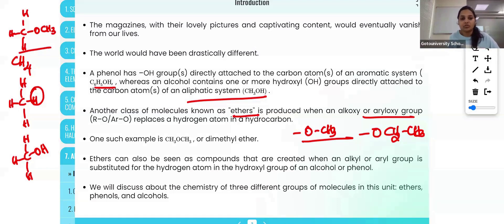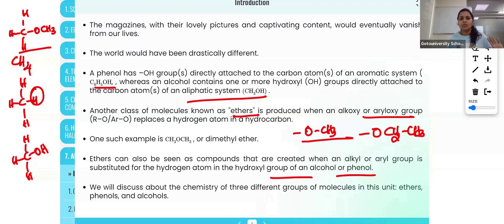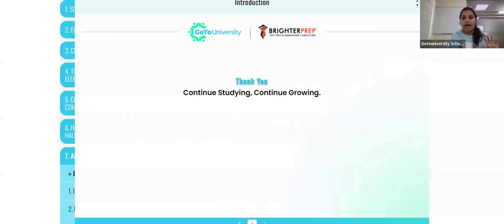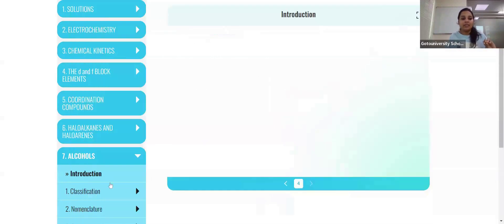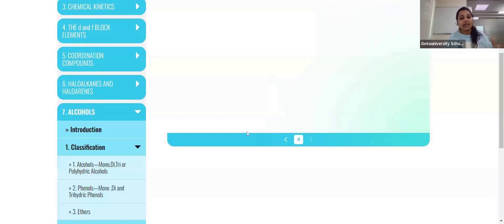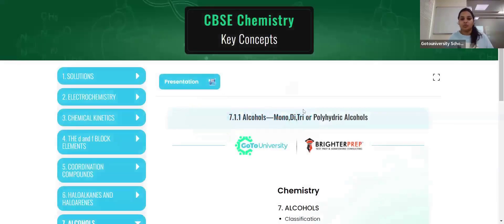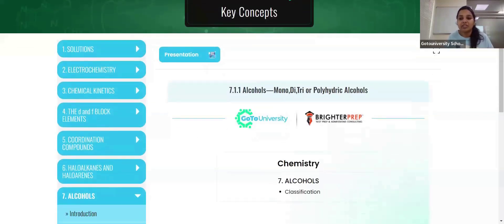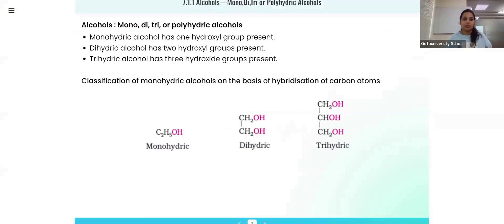Ethers will be studied in the last session of this topic. Ethers have a good aroma — that is an important property. They are formed by substituting the hydrogen atom in the hydroxyl group of an alcohol or phenol. So to summarize: alcohols mean an alkyl group is connected to the OH group; phenols mean an aryl group is connected to the OH group; and ethers mean hydrogen from a hydrocarbon is replaced by an alkoxy group.